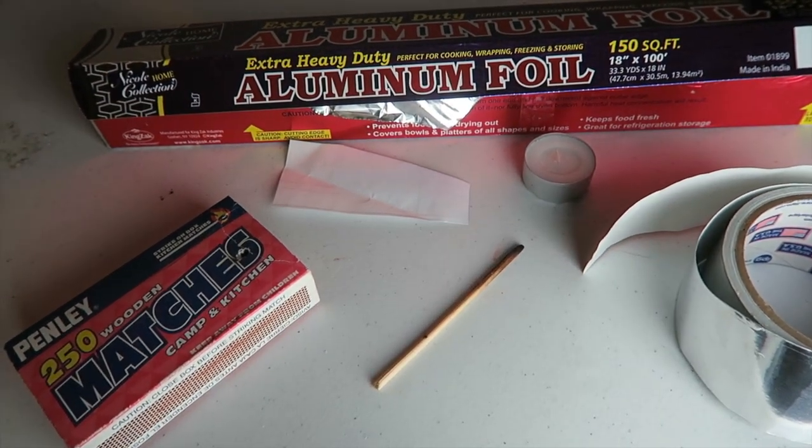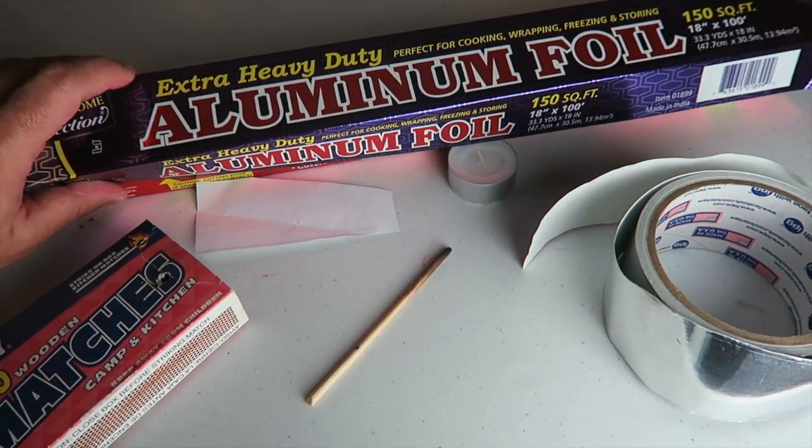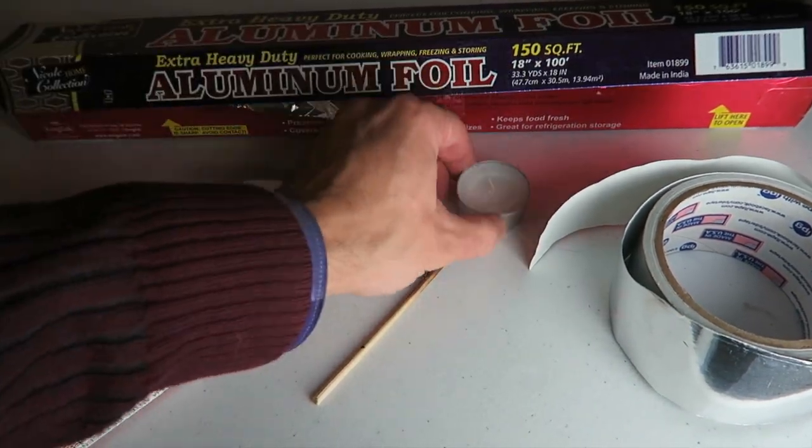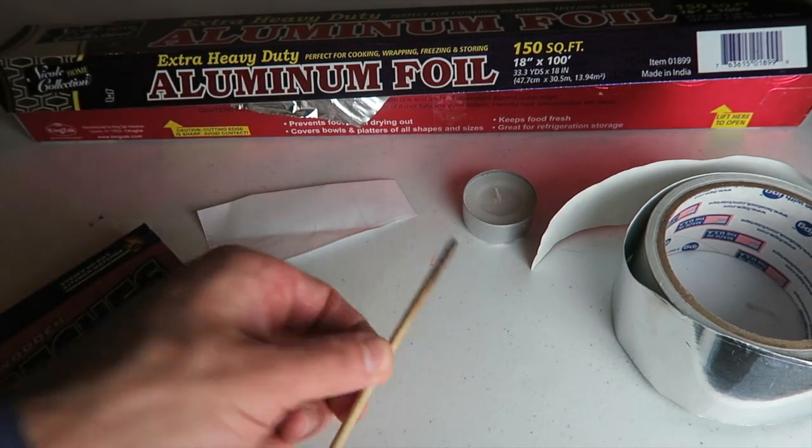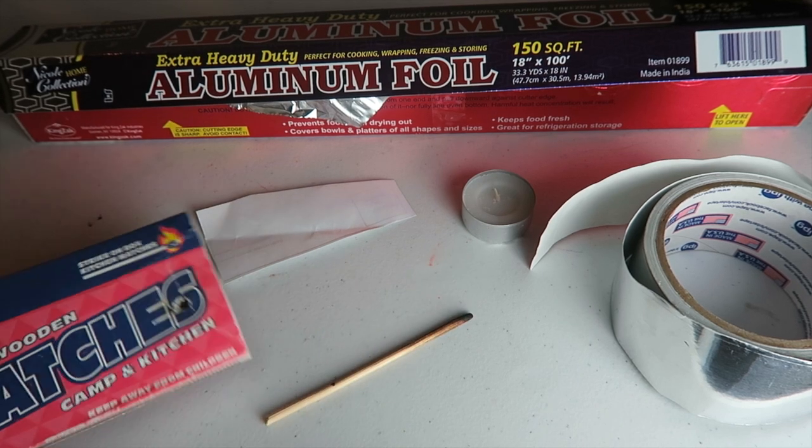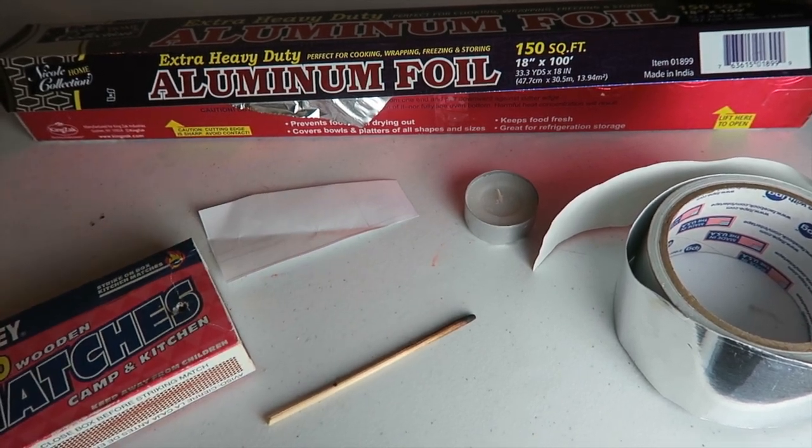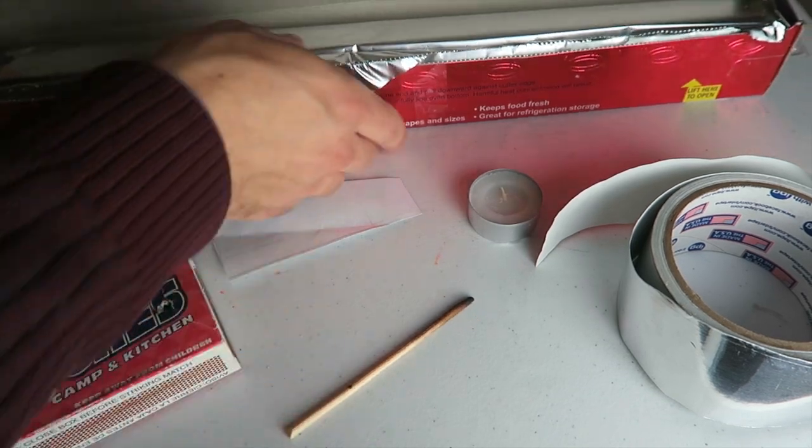All you need is some metallic tape, heavy-duty extra heavy-duty aluminum foil, a candle, a piece of paper this size, a skewer with the end half of it cut off, and a box of matches. Oh and a scissor. So here's what you need to do.